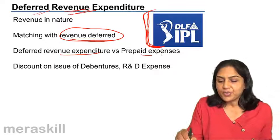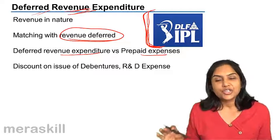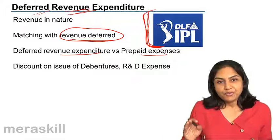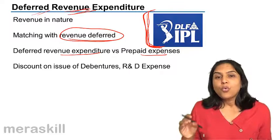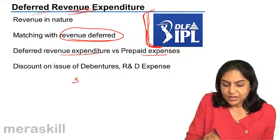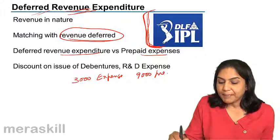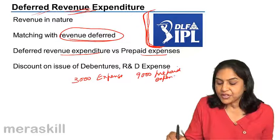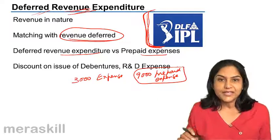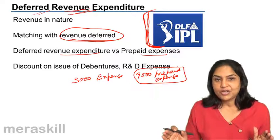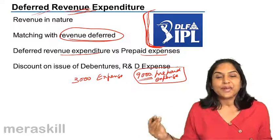There is a small difference between deferred revenue expenditure and prepaid expense. In the case of a prepaid expense — take a simple example of insurance premium — we pay insurance premium on January 1st for 12 months, an amount of 12,000. We close our books on 31st March. So 1,000 per month for three months is an expense: 3,000 is an expense, and the remaining 9,000 is a prepaid expense because it relates to the next year. This is not referred to as deferred revenue expenditure because we know precisely the amount and the period — exactly 9,000 is the benefit we will receive in the next year.